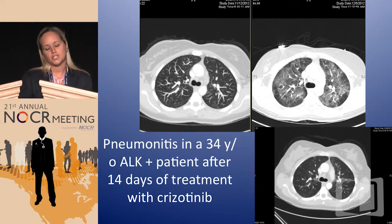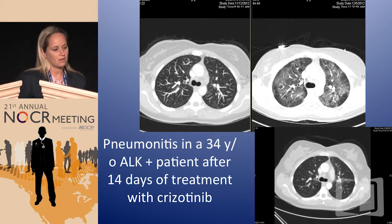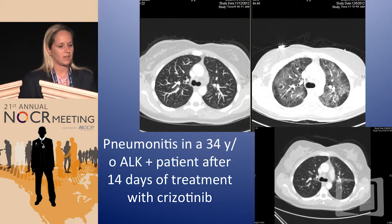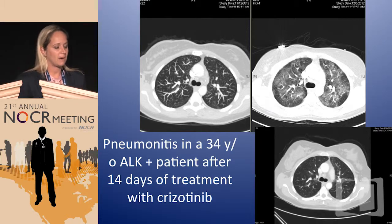For GI toxicities, give antiemetics but maybe avoid 5-HT3s due to the bradycardia risk. Use loperamide for diarrhea. For bradycardia, caution patients on beta blockers and consult cardiology. Renal impairment is rare but dose reduction is an option. I want to show a picture of the pneumonitis that can occur — a 34-year-old patient with ALK mutation had significant, very rapid pneumonitis just 14 days after starting crizotinib, which resolved two weeks after stopping drug and starting corticosteroids. We then put her on ceritinib, and she had the same effect — this is truly a class effect.